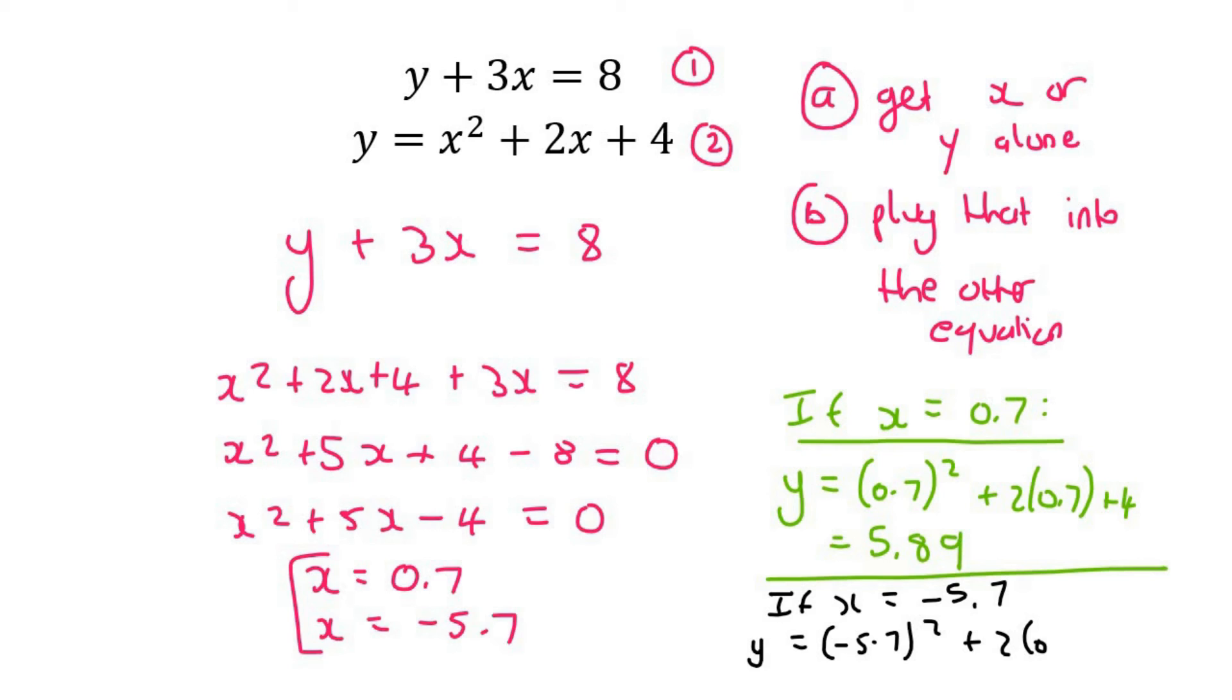Now I'm using a bracket. Negative 5.7 plus 4. And if we had to go work this out, we end up with 25.09.